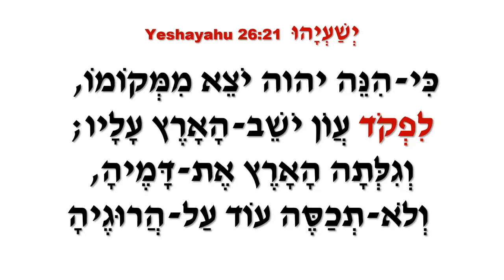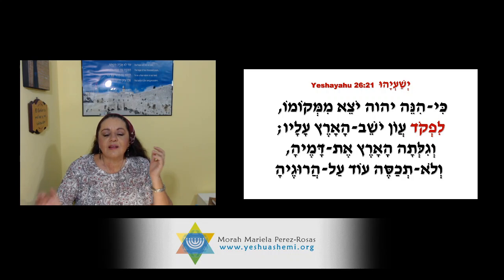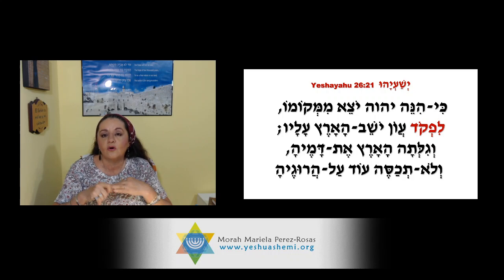Begiltá haaret et dameja — 'y la tierra hará revelar su sangre.' Gilata viene del verbo de revelar, como en Meguilá. La tierra revelará su sangre. Belote jaseot el harugeiha — 'y no encubrirá más a los que han sido asesinados.' Acuérdense que esto lo vemos desde Bereshit, cuando dice 'la sangre de tu hermano clama.' Estamos viendo que esta palabra — cuando es contado, es visitado, o es castigado — abarca todo eso.